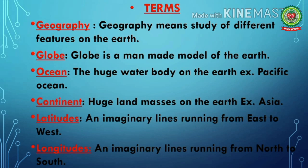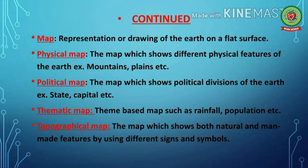Number three: ocean means the huge water body on the earth, for example the Pacific Ocean. Number four: continent means huge land masses on the earth, for example Asia. Number five: latitudes means imaginary lines running from east to west. Number six: longitudes means imaginary lines running from north to south. Number seven: map means representation or drawing of the earth on a flat surface.